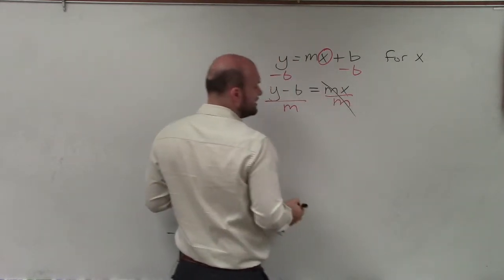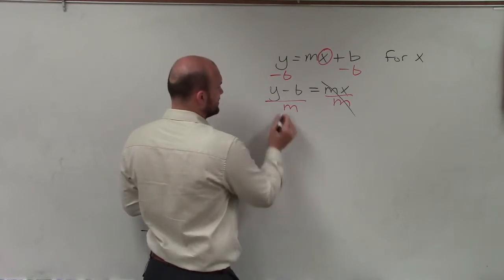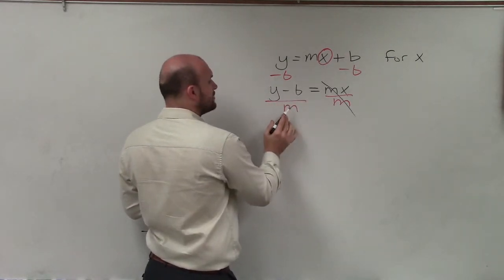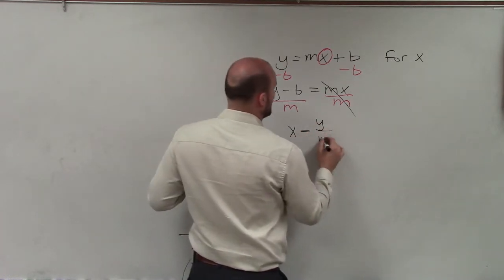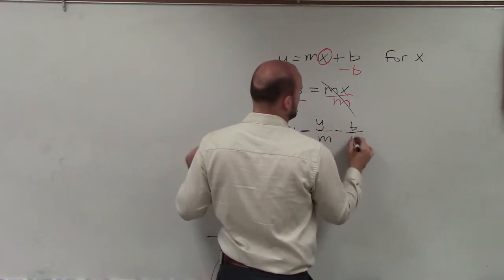m divided by itself is going to equal 1. So therefore, I'm going to be left with y minus b divided by m, where that m can divide into both of those. So my final equation would be x equals y over m minus b over m.